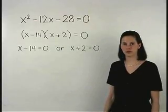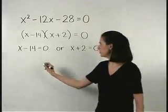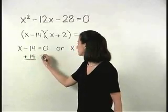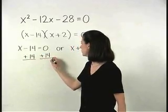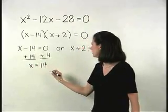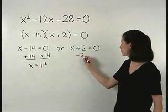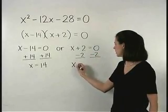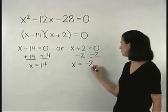Solving each equation from here, we add 14 to both sides of our first equation to get x equals 14. And we subtract 2 from both sides of our second equation to get x equals negative 2.